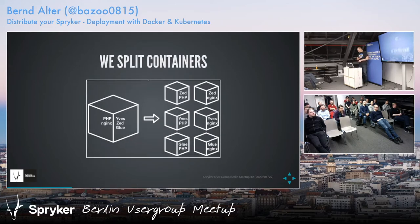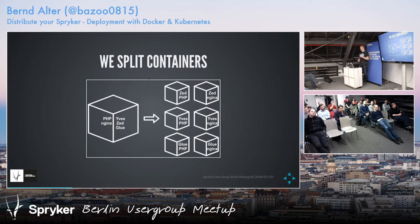But we split the containers — that's the first difference. Spryker does it all in one container: PHP, the application code, NGINX included. I just checked out the Spryker Docker suite and it's like this, all included in one.